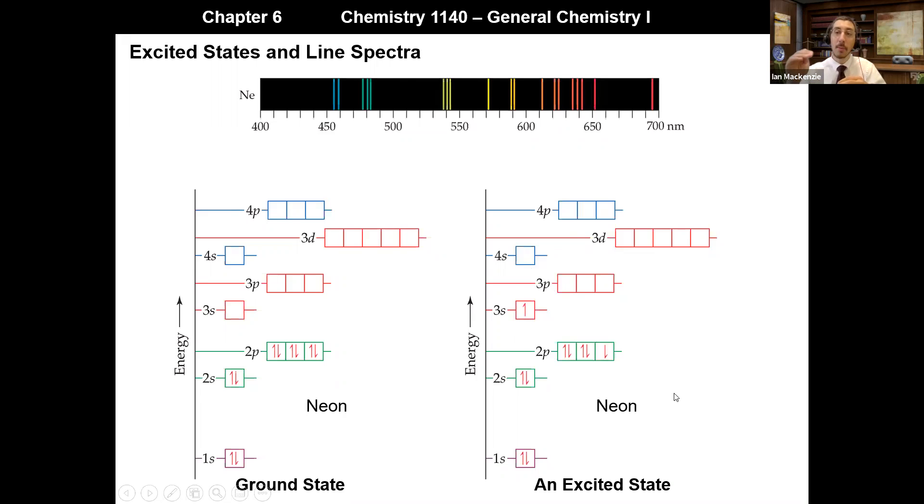And each jump corresponds to a certain energy difference. It gives off the energy difference of the two orbitals as a photon of light, which corresponds to a specific wavelength of light and thus a line in our line spectra. And this is how we see or explain the line spectra for neon or for any atom.